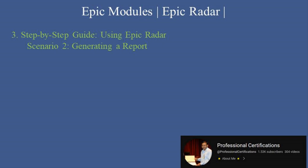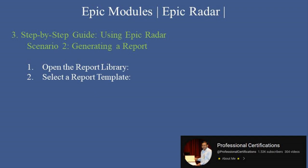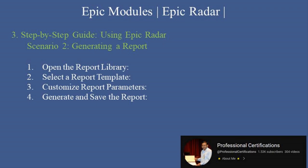Scenario 2: Generating a report. Step 1 — open the report library and access the list of available reports in the Radar module. Step 2 — select a report template that matches your data requirements, such as patient admissions or financial summaries. Step 3 — customize report parameters by filtering data by date range, department, or other criteria to tailor the report. Step 4 — generate and save the report: run the report, review the data, and save or export it as needed.